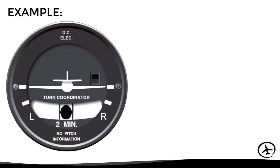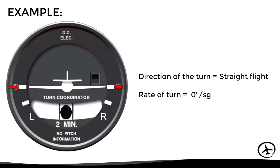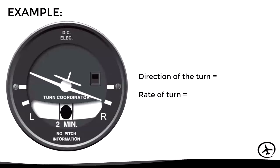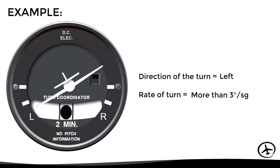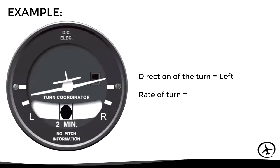Here are examples of reading the turn coordinator: when the wings of the miniature aircraft are leveled and pointing the upper marks, it indicates straight flight. If the miniature aircraft tilts so that the wing points to the lower mark on the right, it indicates a turn to the right at three degrees per second. The same applies for a left turn. If the wing is beyond the mark, it indicates a turn at more than three degrees per second; if short of the mark, less than three degrees per second.